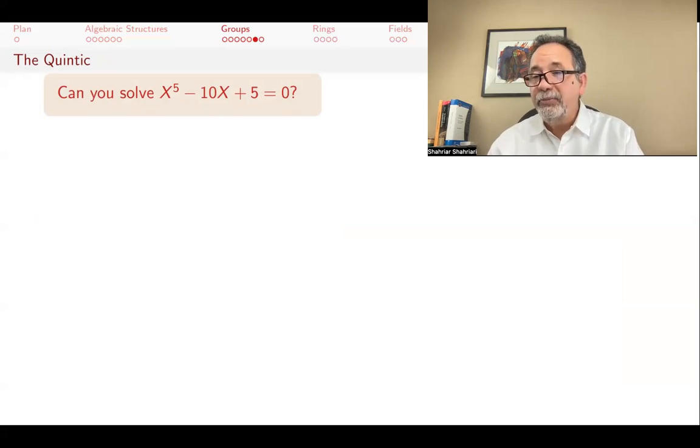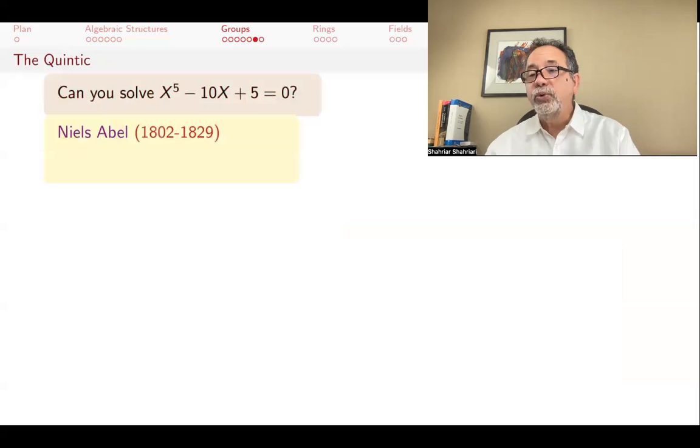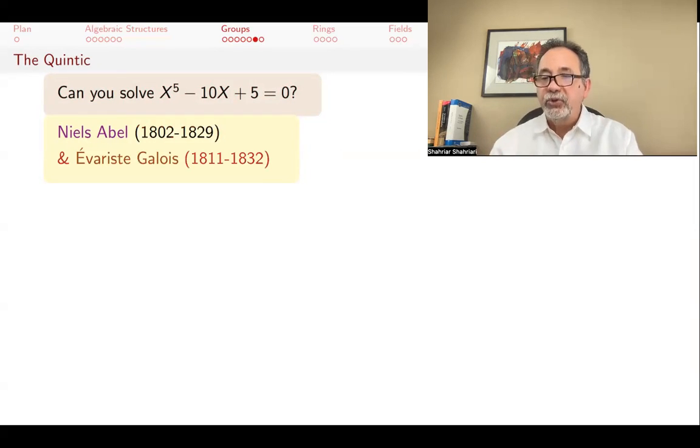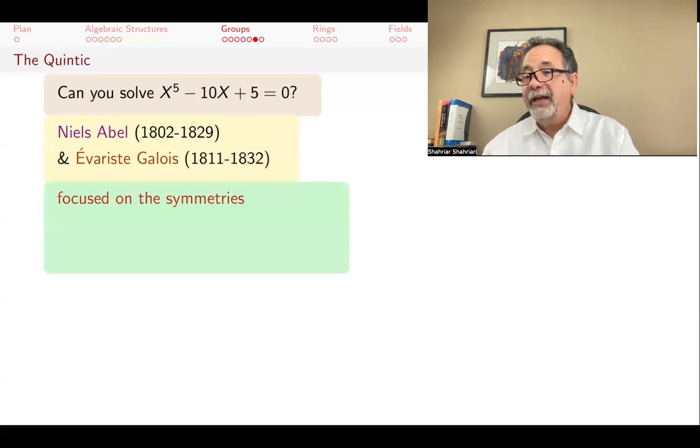Now, starting in the 16th century, mathematicians were interested in quintic equations of degree 5, such as x to the fifth minus 10x plus 5 equals 0. It took a long time to resolve the issue of solving a quintic. Two mathematicians who did crucial work in this regard and both died tragically when they were young were Norwegian mathematician Niels Abel and the French mathematician Galois. We'll leave their stories quite fascinating when we do Galois theory. These two independently got major results regarding the quintic. Galois actually went much further, but they actually focused on the symmetries among the roots of an equation.